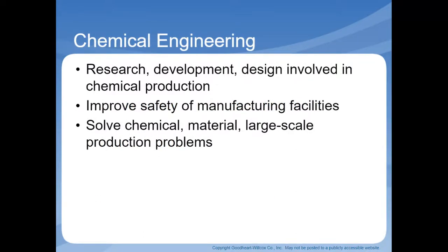The chemical engineer researches, develops, and is involved in chemical production. They improve safety in manufacturing facilities and solve chemical, material, and large-scale production problems.